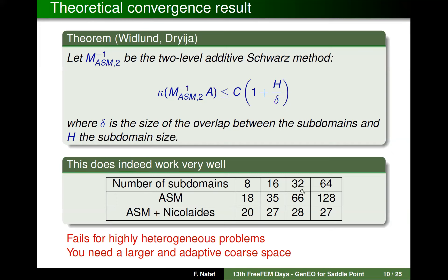In practice, a numerical table shows that as the number of subdomains increases from 8 to 64, the one-level method's iteration count doubles each time you double the subdomains, whereas the two-level method with the Nicolaides coarse space stays stable at around 27–28 iterations, making the method scalable. However, the constant C depends on the heterogeneities in a bad way, so this is not sufficient for highly heterogeneous problems — you need a larger, adaptive coarse space that you cannot design by hand.